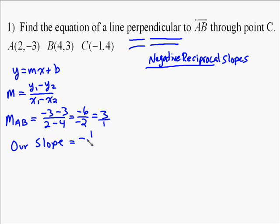So our slope is negative 1 third. Now we have a slope, and we know the line's got to go through point C, so we've got a slope and a point. We use the formula y equals mx plus b, and we go find the equation. First insert the slope, so y equals negative 1 third x plus b.